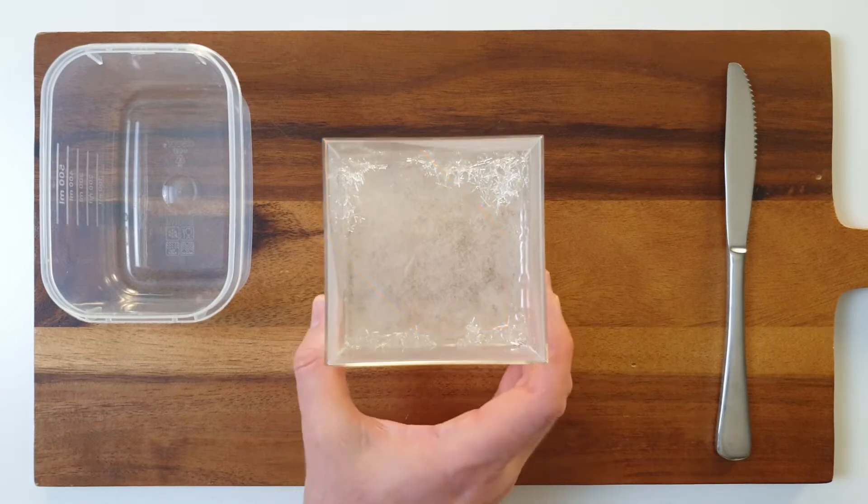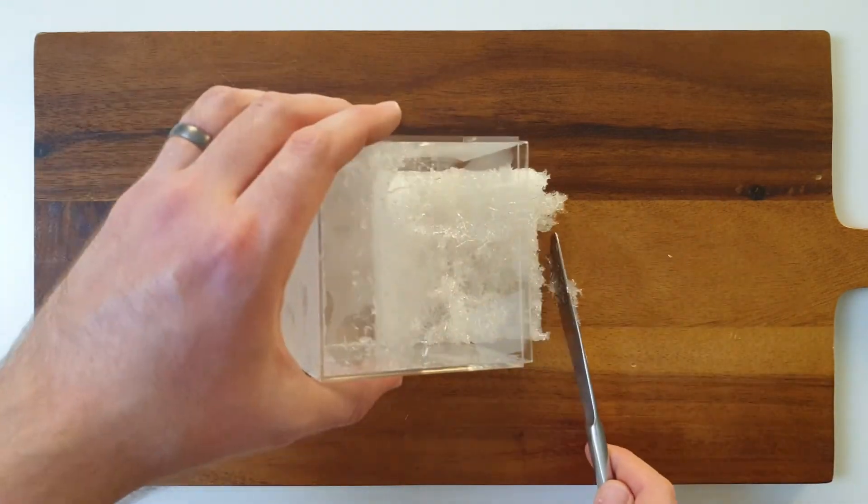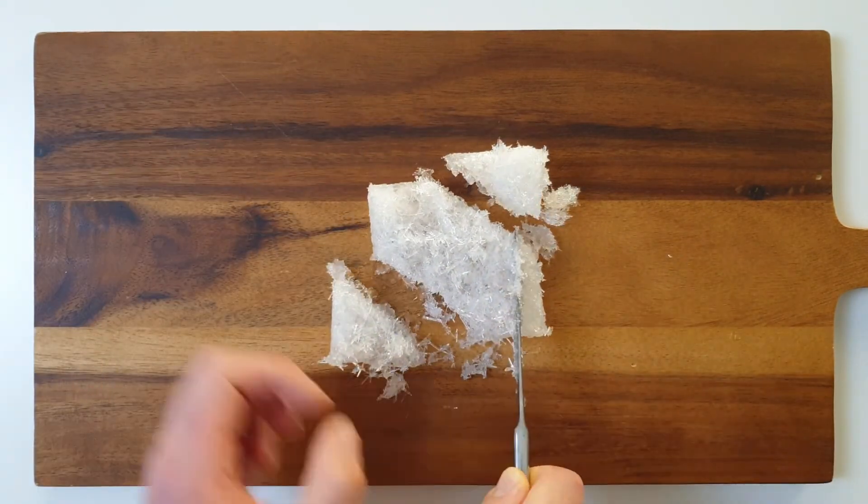So the first thing I'm going to do, is pour out the excess solution, carefully remove the crystals from the container, and cut out this shape from the block of crystals.